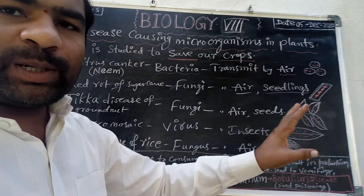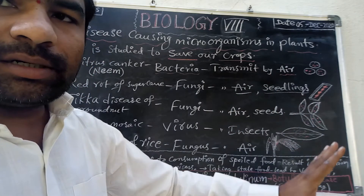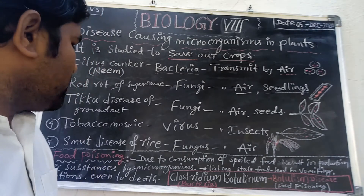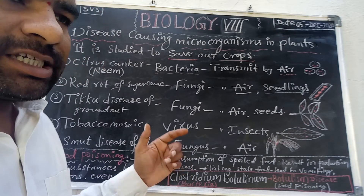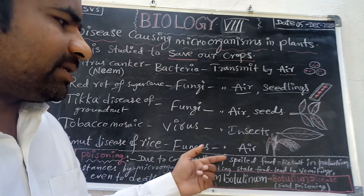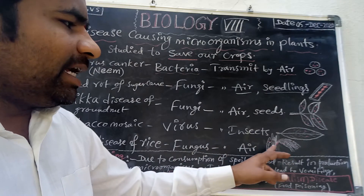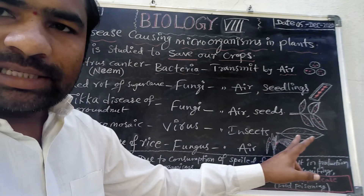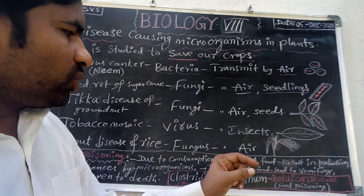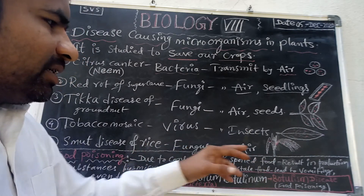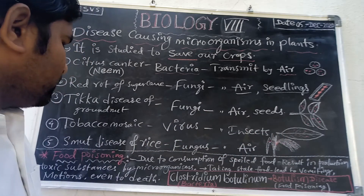A mosaic pattern can be seen on the underside surface of the leaves. Smut of rice is caused by fungus and is spread by air. On the leaves and on the grains, red-colored spots will be seen. This is because of smut, caused by fungus.